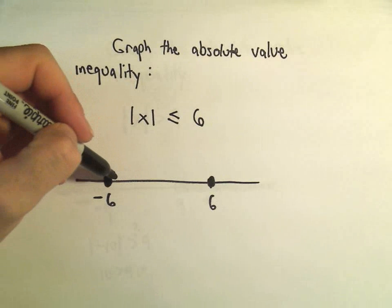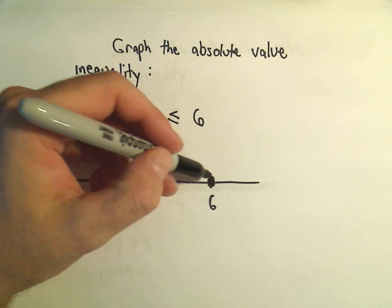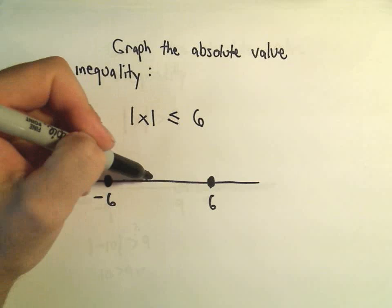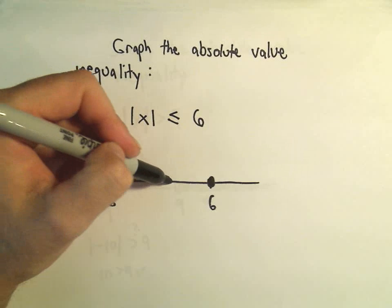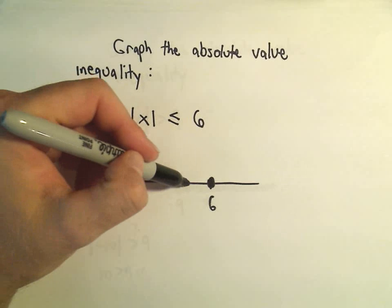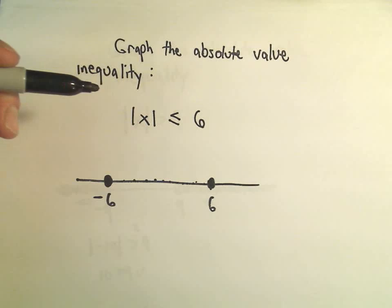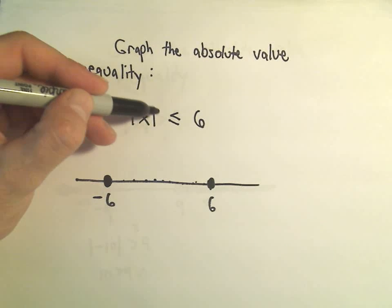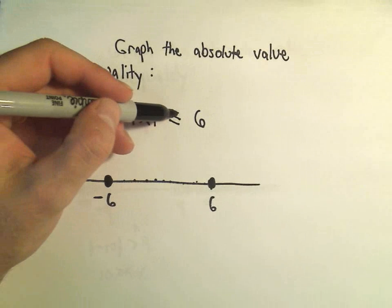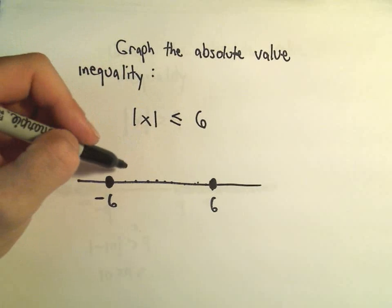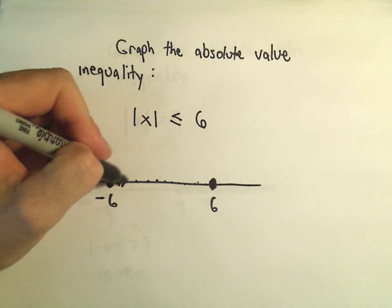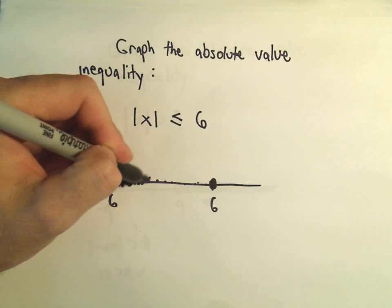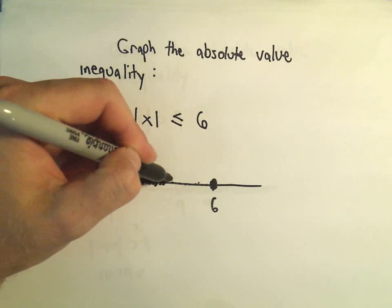Notice if we take any number in between negative 6 and 6 — negative 5, 4, negative 3, negative 2, negative 1, 0, 1, 2, 3, 4, 5, 6 — the absolute value of all of those numbers ends up being something less than or equal to 6. So everything in between also works.